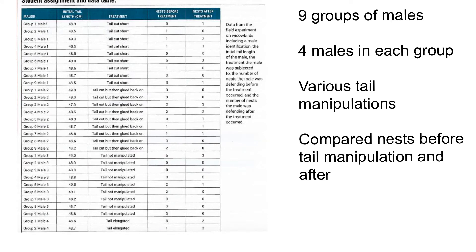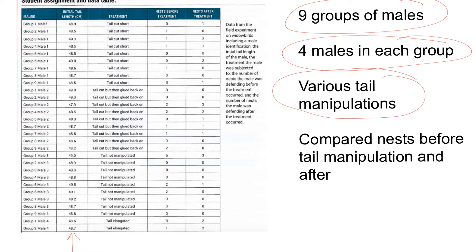This is a real experiment done from a field study. They took nine groups of males — four males in each group — measured their tails, and then did various tail manipulations. Sometimes the birds got their tails cut short, sometimes they were cut but glued back on, some had no manipulation, and some had their tails actually elongated. Then they measured how many nests were made before and after. More nests means the males were more successful in courting females and produced more offspring.